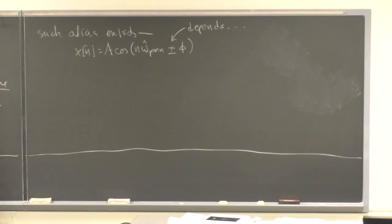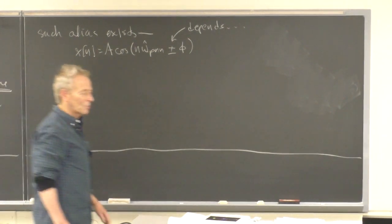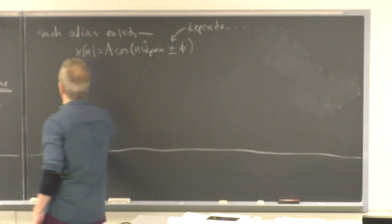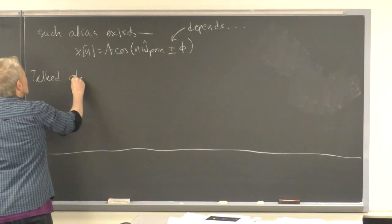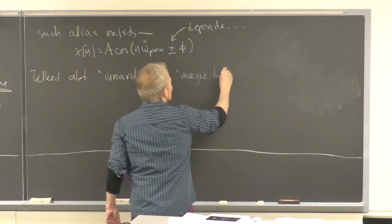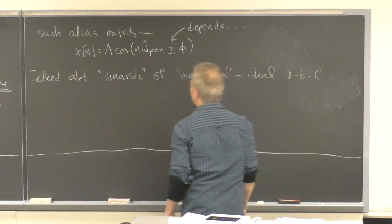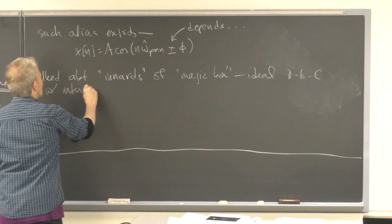Unlike continuous time — where principal aliases with respect to a sampling frequency are all different signals that sample the same as x(t) — in discrete time these are all the same signal, just written differently. That's where we were last time. We also talked about what's inside the magic box, the ideal D-to-C converter with interpolation interval T_s, which uses sinc function interpolation.